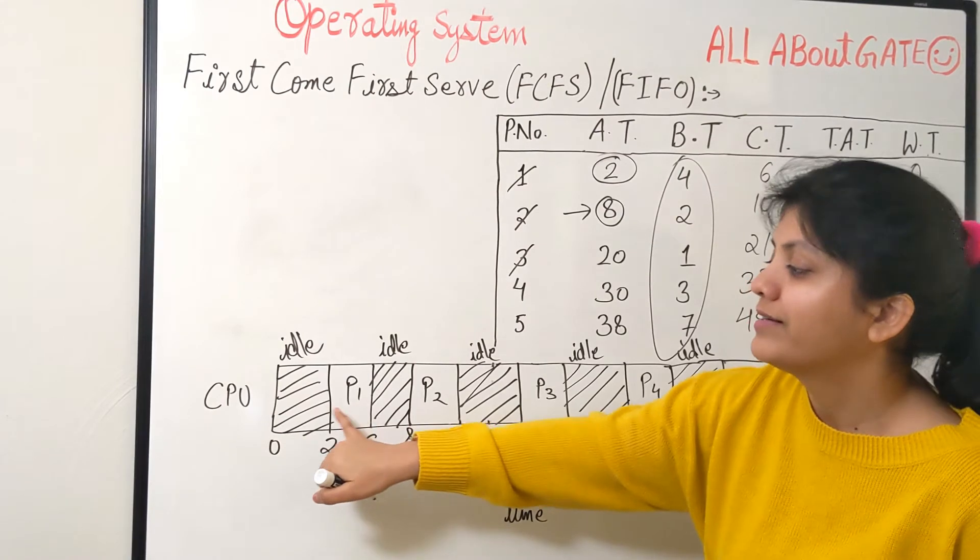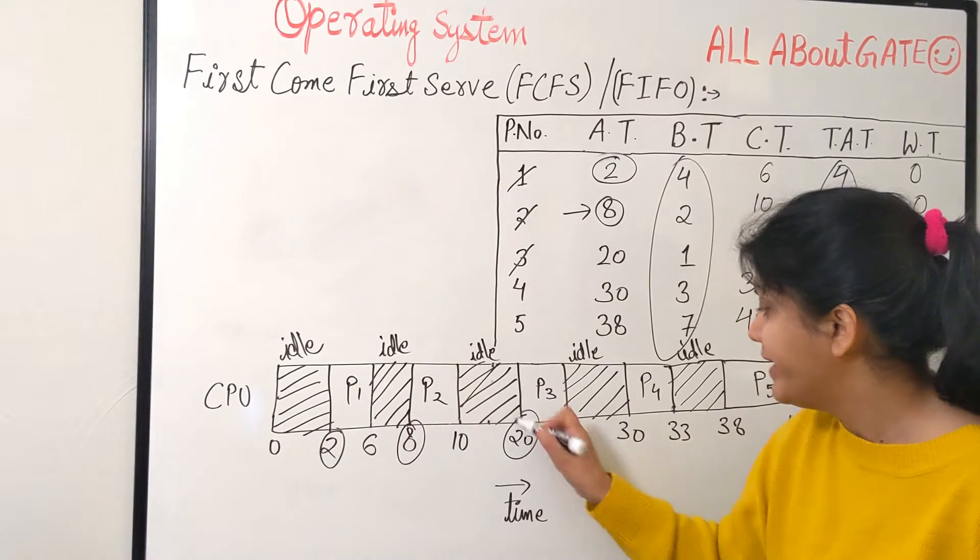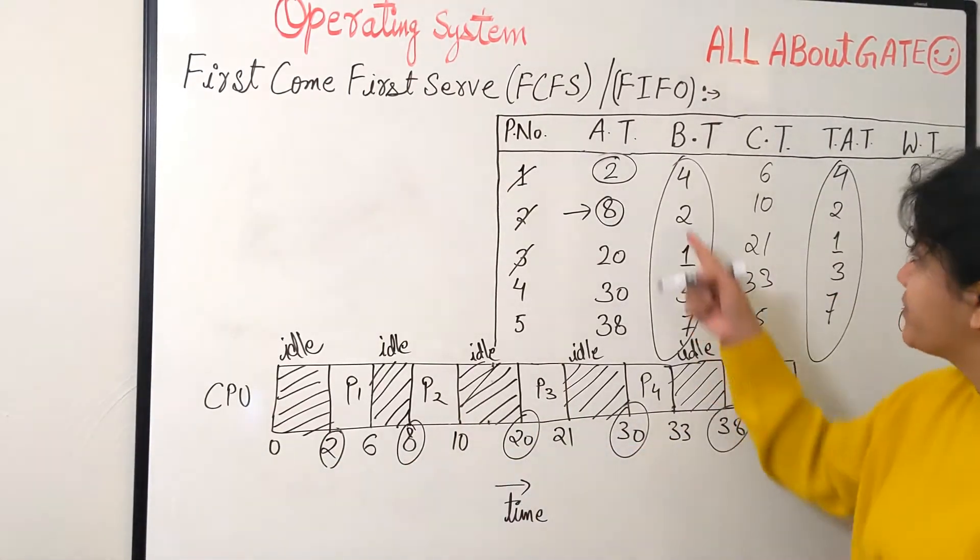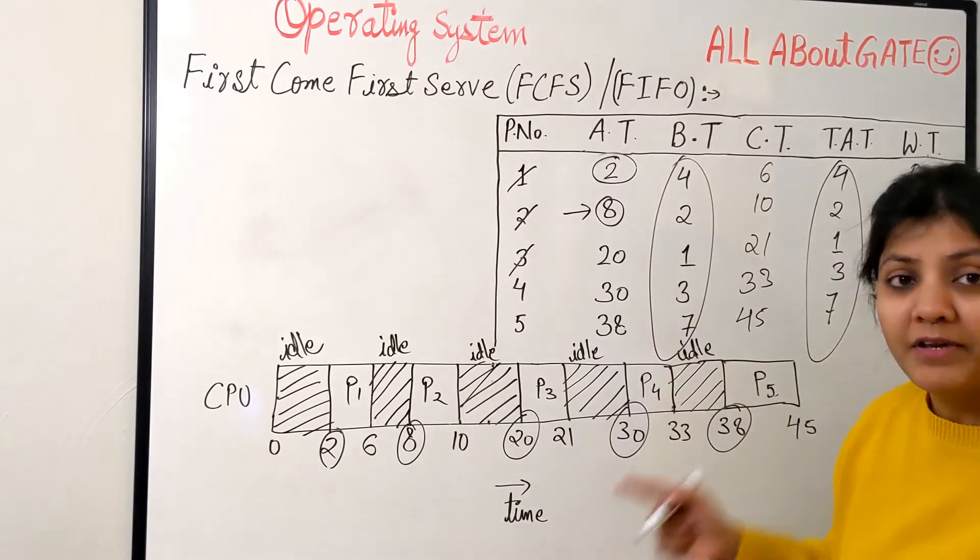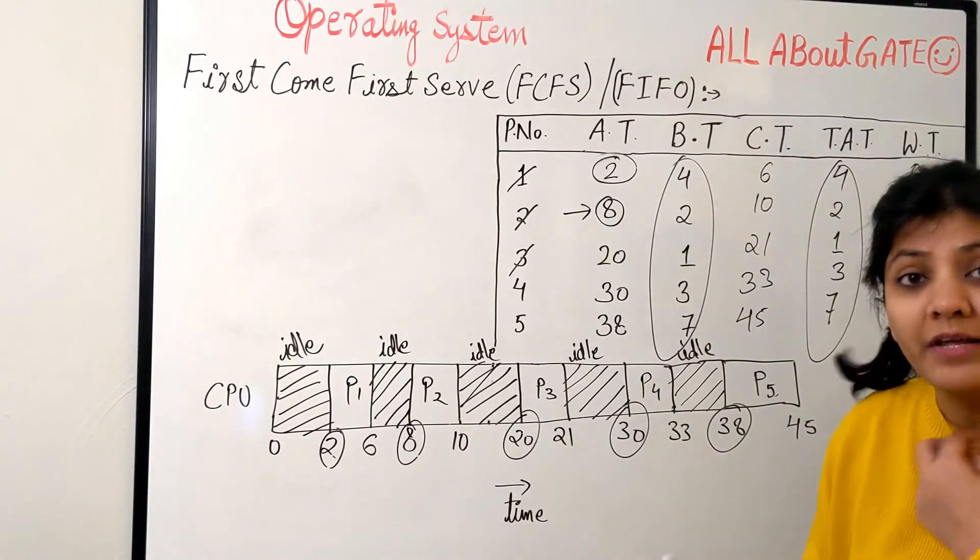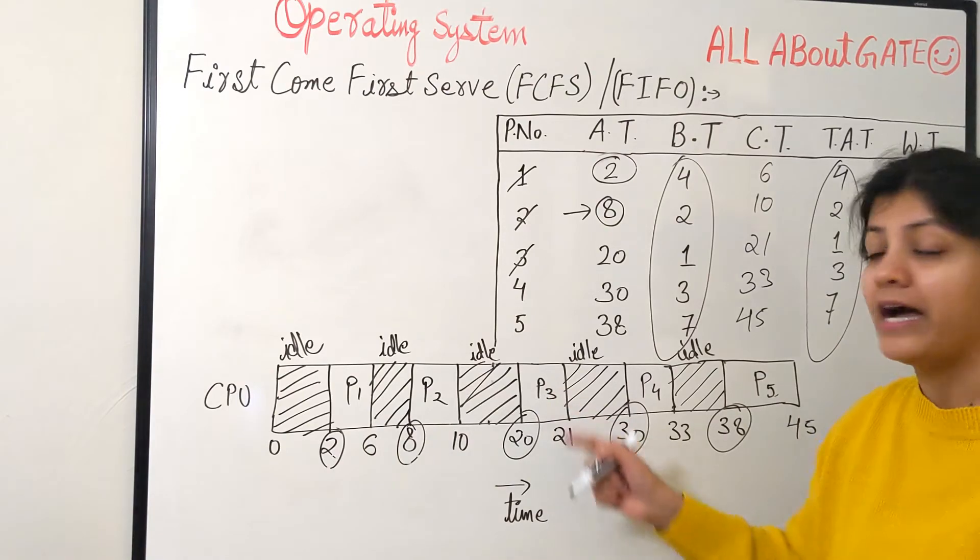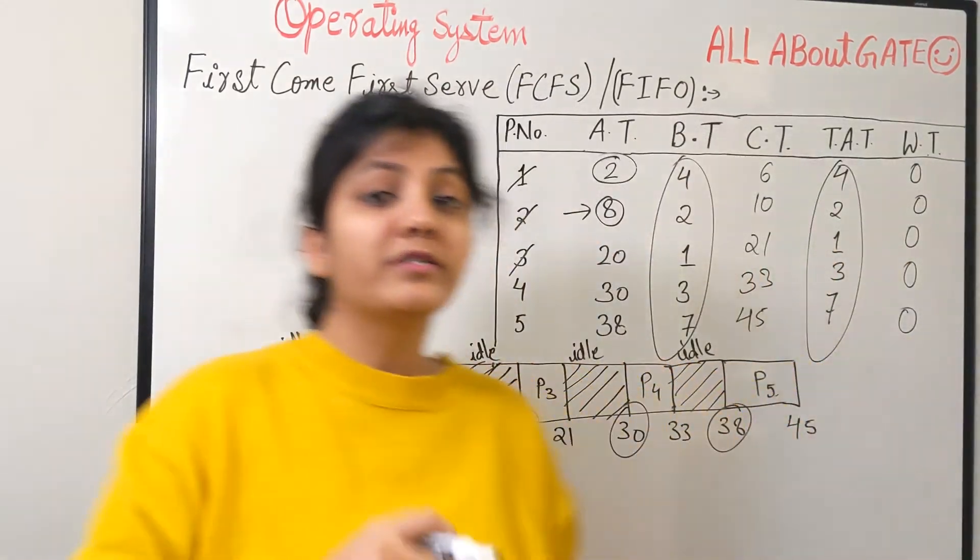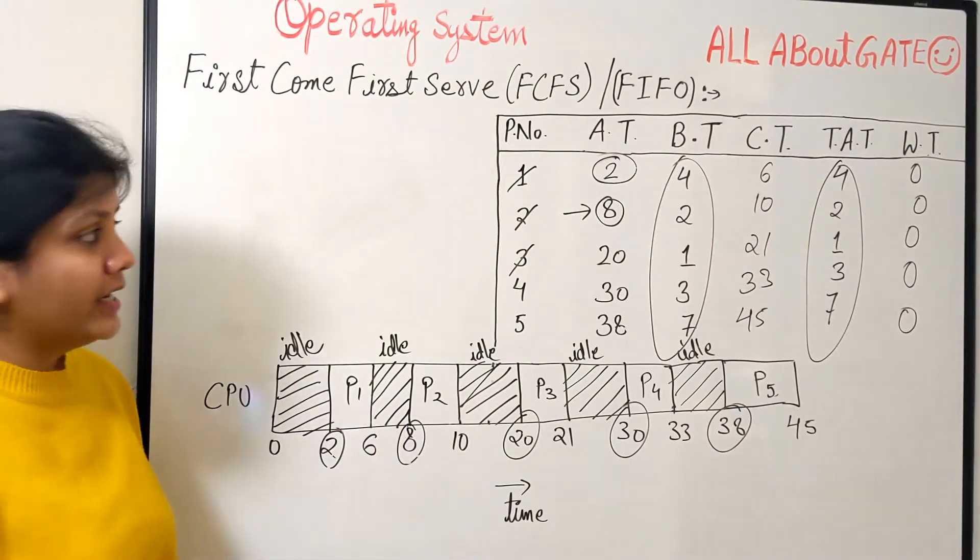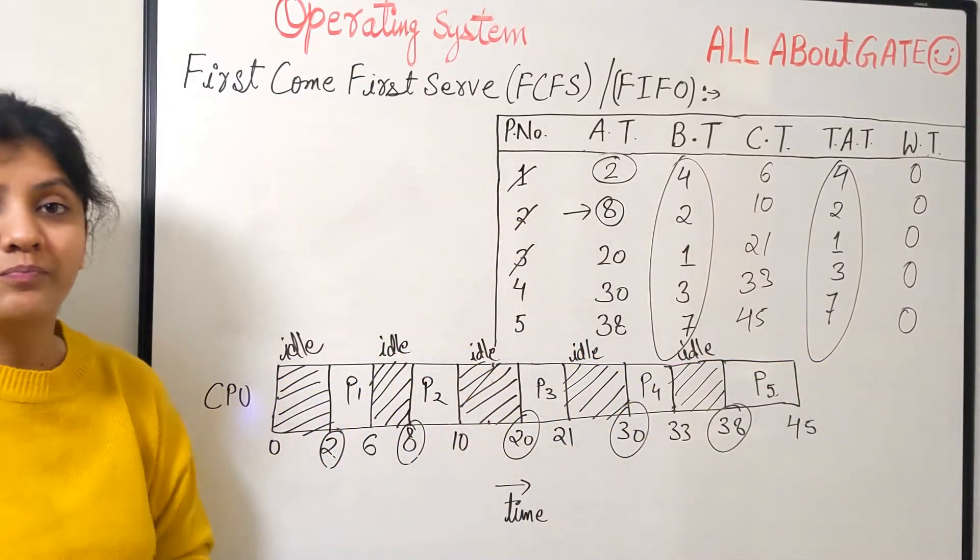Why? Because P1 as soon as it came, you see the time 2, the time 8, 20, 30, 38. What are these? These are their respective arrival times. That simply means whenever they arrive they were immediately scheduled because no other process was available. So these processes have to wait for none of the time. They waited for 0 seconds. So this is how the scheduling is done and you can easily find out the average turnaround time. Waiting time is definitely 0.